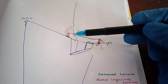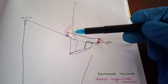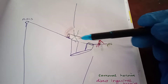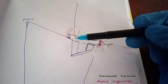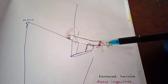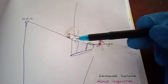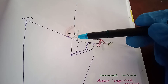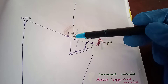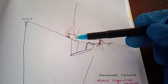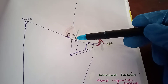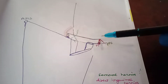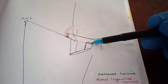So Hesselbach's triangle is the neck of direct inguinal hernia. When abdominal content enters the inguinal canal through this aperture, it may come out through the superficial inguinal ring, but the neck lies at Hesselbach's triangle. The neck of femoral hernia is the femoral ring.